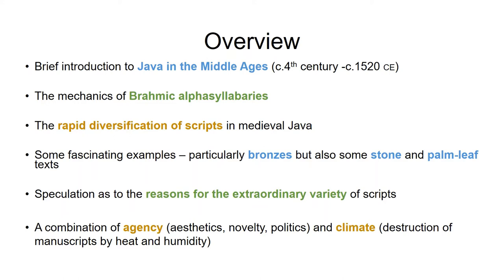But then also climate — a model that looks at Java as basically an equatorial or tropical place in which the destruction of manuscripts was such a regular occurrence, because of the heat, humidity, and insects, that scripts were forced to change simply because copies of manuscripts would always be based on recent copies. Any changes to the script would build up over time, leading to lots of unique variants in different parts of the island.